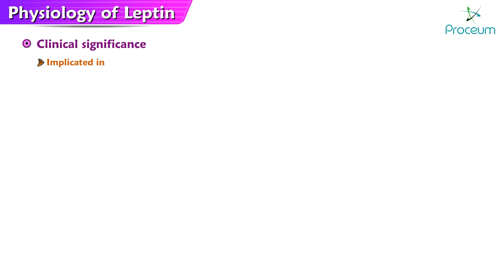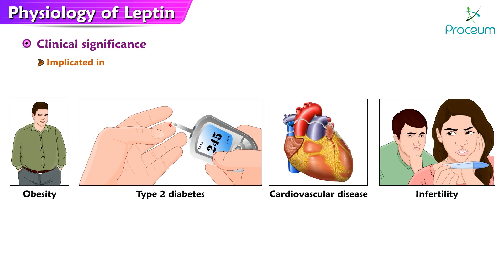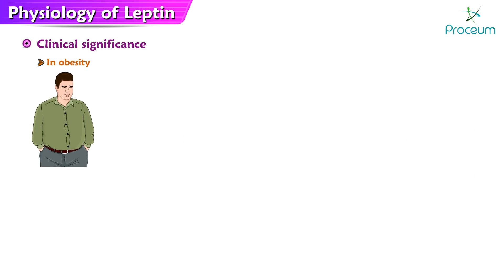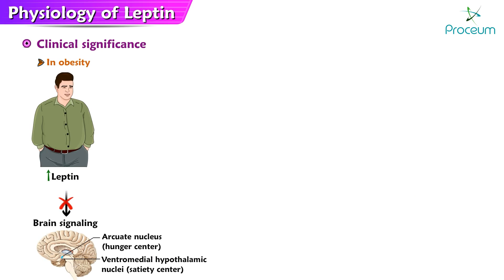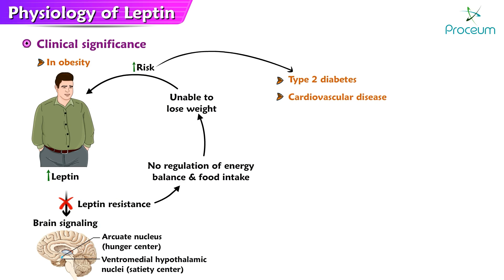Clinical significance. Leptin has been implicated in several diseases and disorders, including obesity, type 2 diabetes, cardiovascular disease, and infertility. In obesity, high levels of leptin are often present but the hormone is not able to signal the brain effectively, leading to a state of leptin resistance. This means the body is unable to respond to leptin signals, resulting in failure to regulate energy balance and food intake, placing individuals at higher risk of obesity-related diseases such as type 2 diabetes and cardiovascular disease.